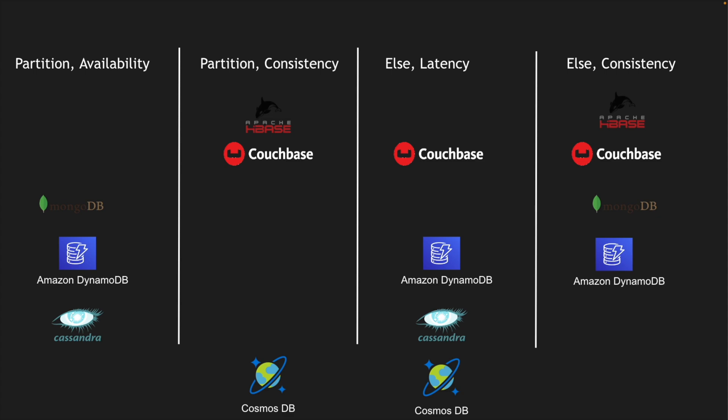PostgreSQL is a database that can be leveraged for any of the four categories — you can tune it for availability or consistency with a partition, or choose between latency or consistency without one. Similarly, the Hazelcast in-memory data grid follows the same pattern. In a nutshell, PACELC goes beyond CAP by overlaying databases not just on availability and consistency, but also with respect to latency in geo-replicated distributed systems.